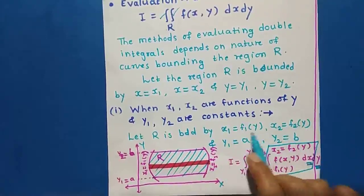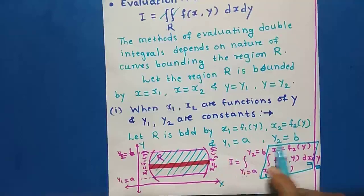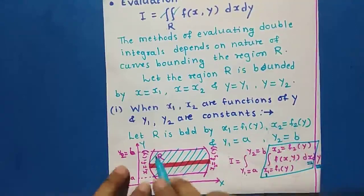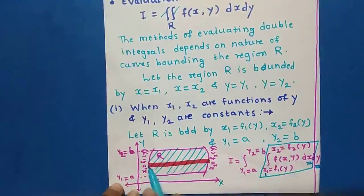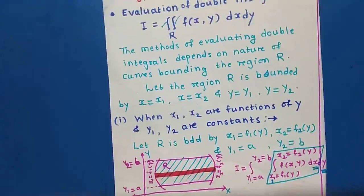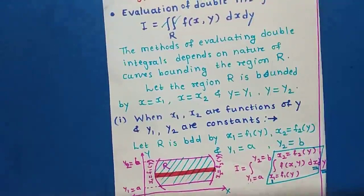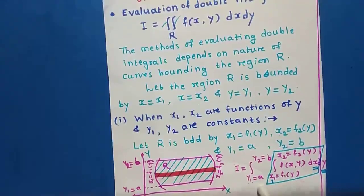Here region R is bounded by x1 = f1(y) and x2 = f2(y), meaning x1 and x2 are functions of y, and y1 = a and y2 = b. This is our region of integration. Using these boundaries we draw the region of integration, and since the limits of x are functions of y, we take a horizontal strip. Using these limits we evaluate the integration.